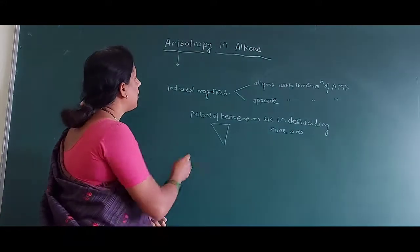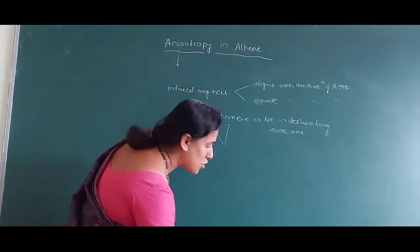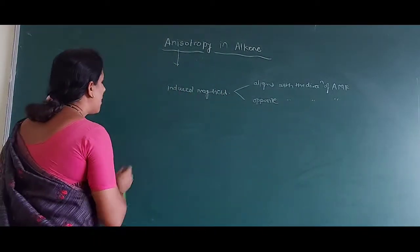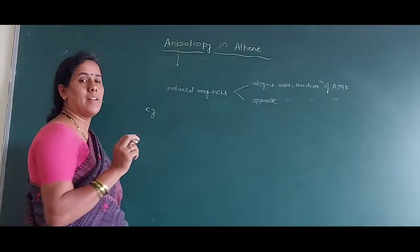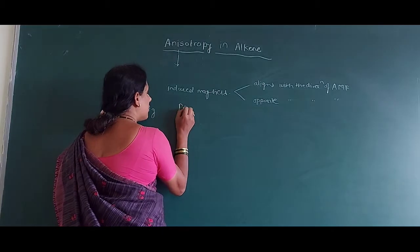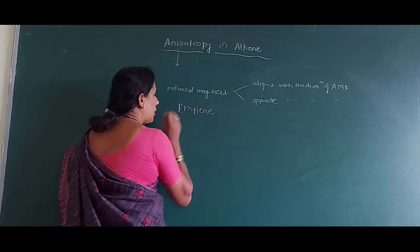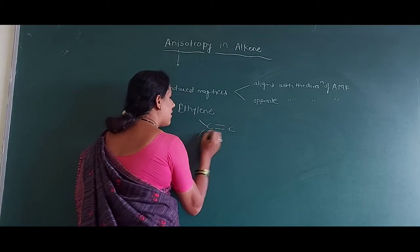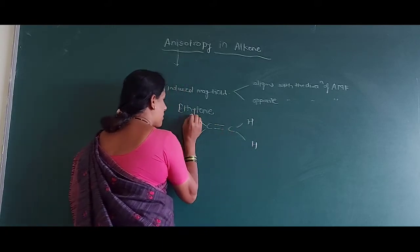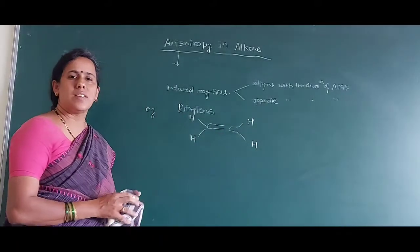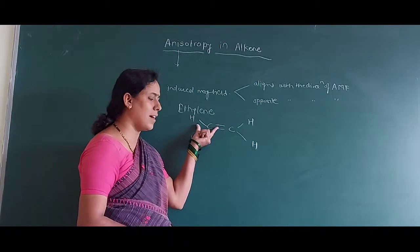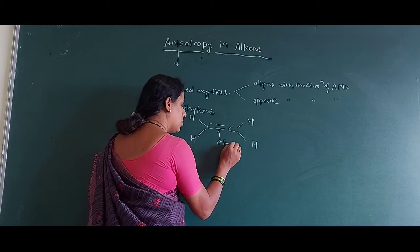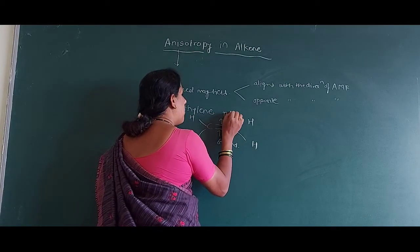Let us start with alkenes. Consider the example of ethylene. The structure has a carbon-carbon bond with hydrogens. The hydrogens in this electron dimension are considered as protons. One bond is the sigma bond and another is the pi bond.